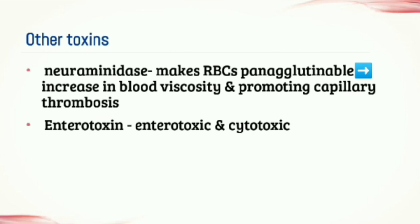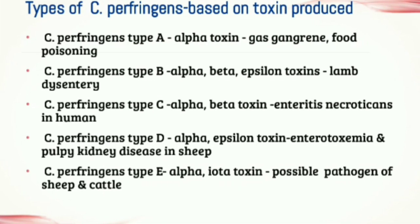Based on the toxins produced, Clostridium perfringens can be classified into types A to E. Among these, only types A and C cause diseases in humans. Clostridium perfringens type A, which mainly produces alpha toxin, is responsible for gas gangrene and food poisoning. Clostridium perfringens type C is responsible for enteritis necroticans, an illness caused by eating food contaminated with a large number of bacteria that produce enough toxin in the intestine to cause illness.